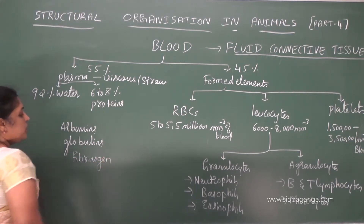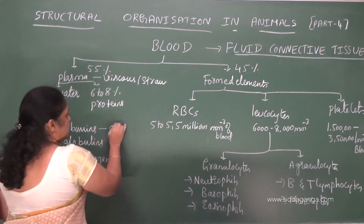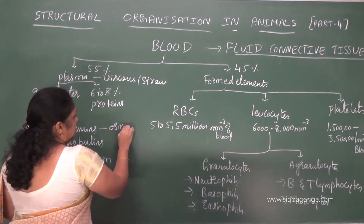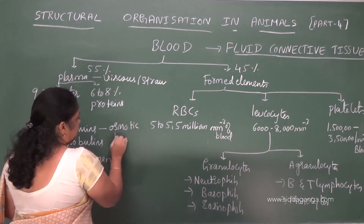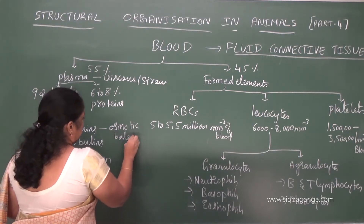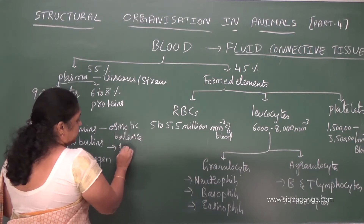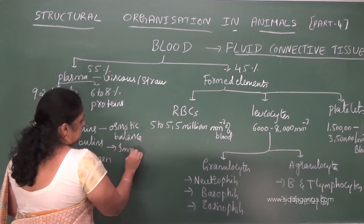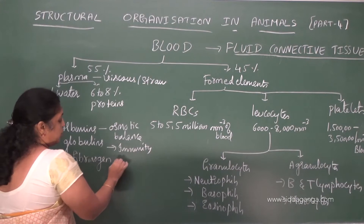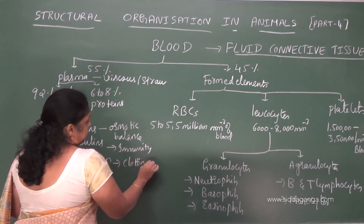Albumins maintain osmotic balance. Globulins provide immunity. Fibrinogen helps in clotting of blood.